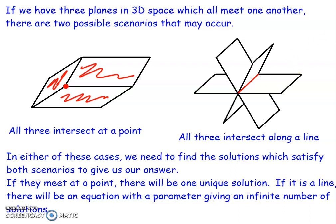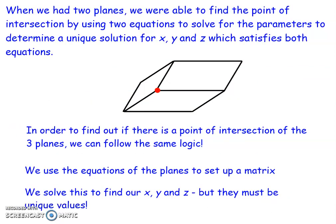I'm going to show you each of the two scenarios and discuss how we'd solve them. The first one is when all three planes meet at a point in three-dimensional space. When we had two planes, we were able to find the point of intersection using two equations to solve for the parameters to determine unique solutions for x, y, and z. Now to find the point of intersection of three planes, we follow the same logic. We need one unique parameter to solve for x, y, and z such that we get that point for all three planes. We use the equations of a plane to set up an augmented matrix, which we then solve for x, y, and z values, giving us a unique single value for each.